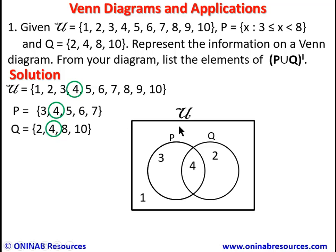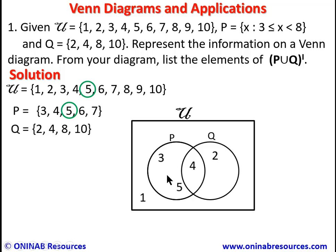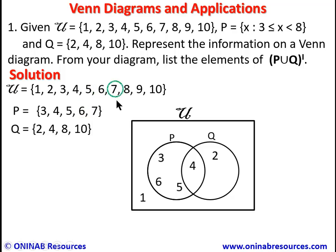5 is in P but not in Q, so it is placed in the P-only region. 6 is also in P but not in Q, so it goes in the same P-only region with 5 and 3. 7 is also in P only, so it is placed in that same region.